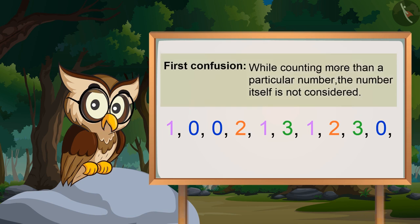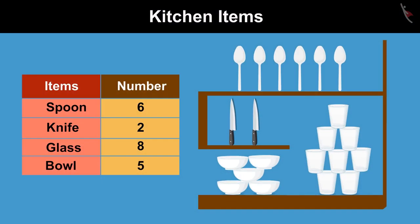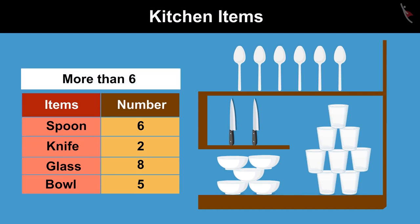We usually get confused, should we count in 2 or not? Let's look at this example. Some kitchen items and their numbers are shown here in a tabular form. Which items are more than 6 in numbers?